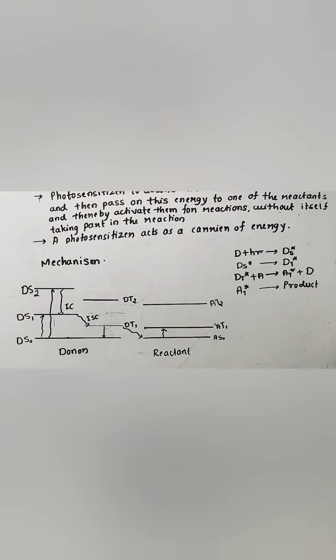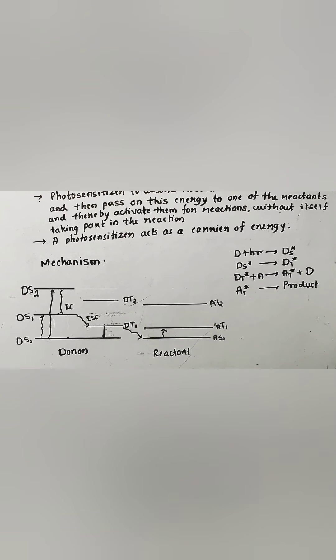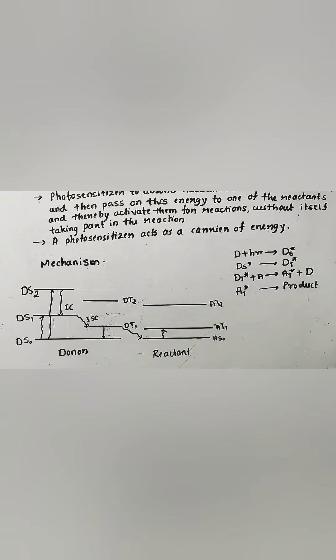We can now see the mechanism. Here B represents the sensitizer, also known as the donor of energy, and A represents the reactant molecule, also known as the acceptor. Initially the donor absorbs the radiations and jumps to a higher energy level. S0, S1, and S2 represent the singlet states. When the molecule is excited to higher energy levels it returns toward the ground state — the transition between singlet states is called internal conversion. Later, through intersystem crossing, the donor jumps into the triplet state, and while returning from the triplet state to the singlet state it loses its energy in the form of radiation.